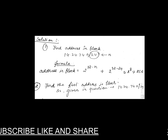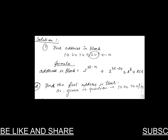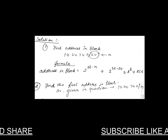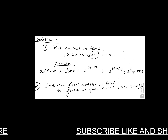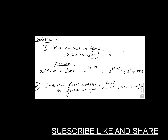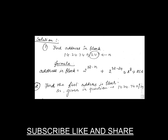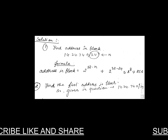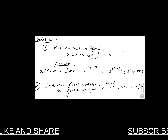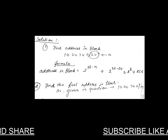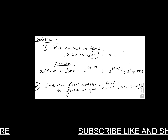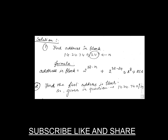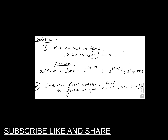First we find the number of addresses in the block. Since n equals 24, we apply the formula 2^(32-n), which gives 2^(32-24) = 2^8 = 256 addresses in the block. In the next step we categorize this 256-address block into a first address and last address.